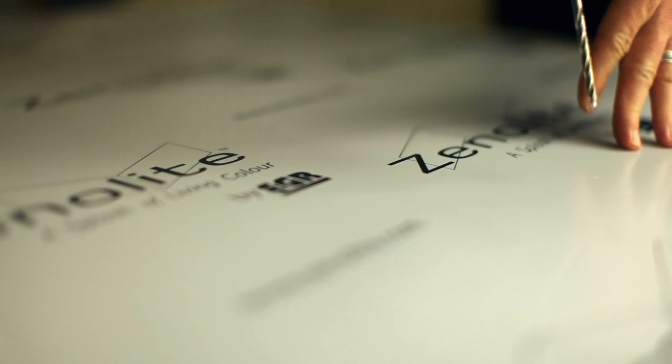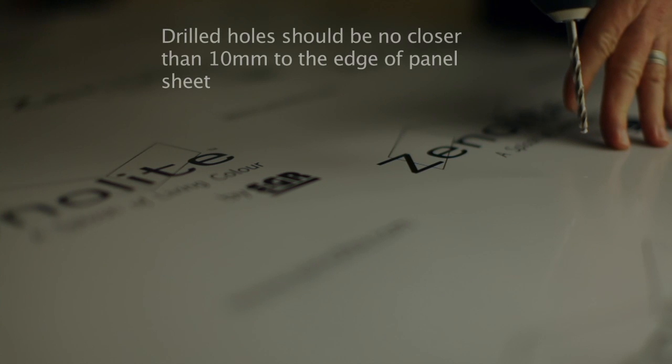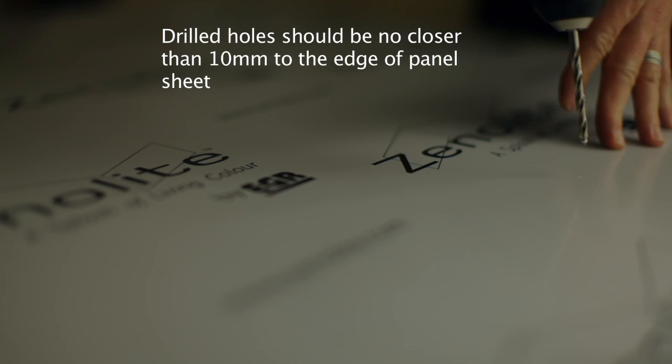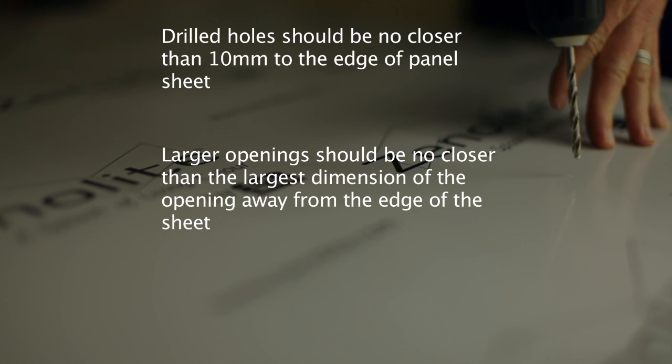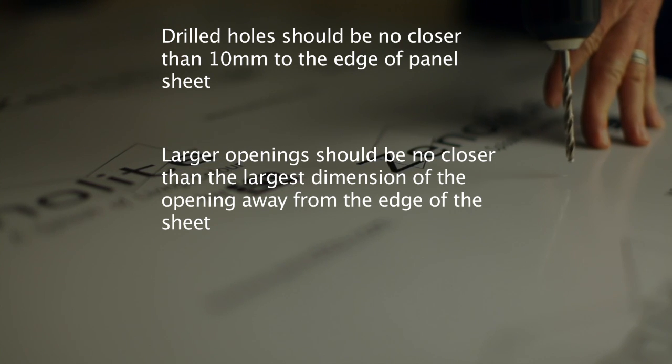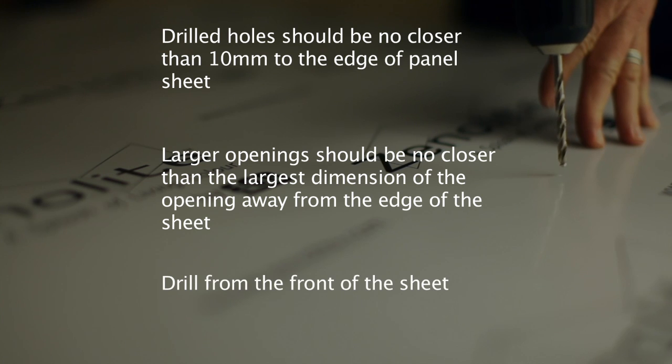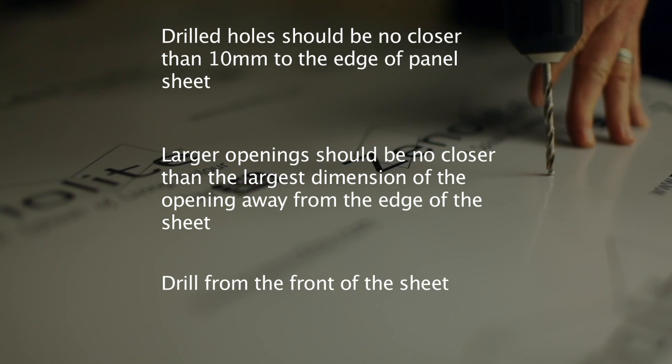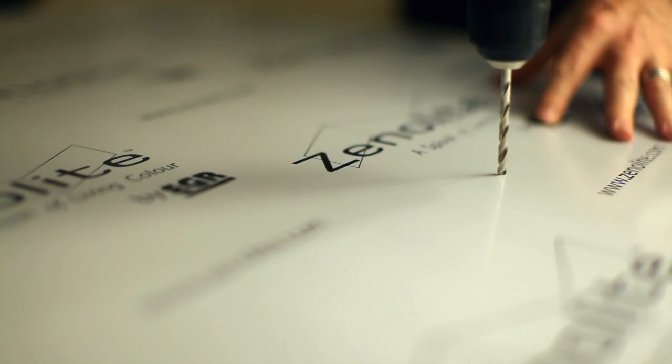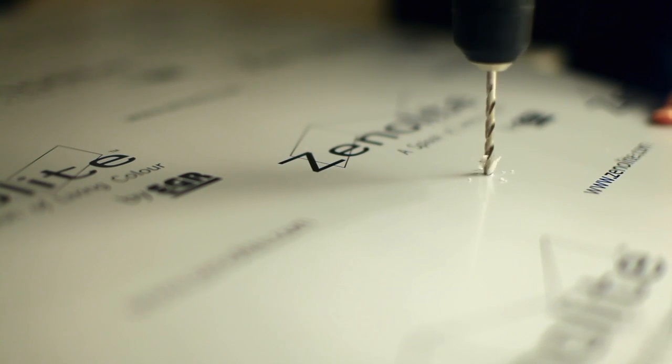Drilled holes should be no closer than 10mm to the edge of the panel sheet. At this time you should drill out any square corners of a previously made cutout. You need rounded corners within the cutout section. Slightly blunt drill bits will work better as they cut through the material more slowly. Always drill from the clear or front side of the Xenolite Plus sheet to reduce the risk of chipping. Best results will be achieved with a slow to medium drill speed.